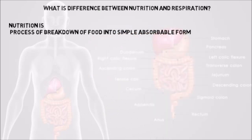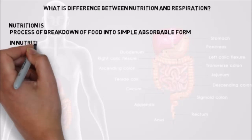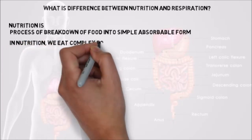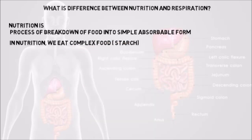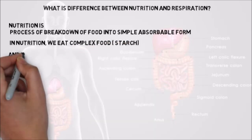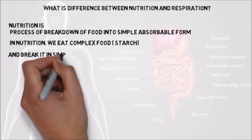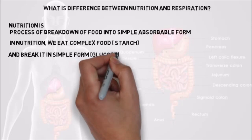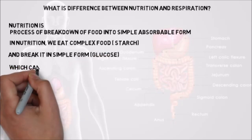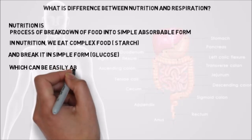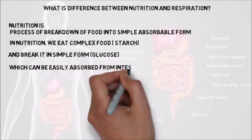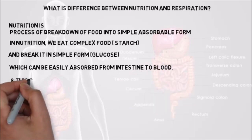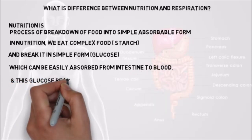Let us understand the basic difference between nutrition and respiration. In nutrition, we eat complex food — i.e. starch — and break it into a simple form, glucose, which can be easily absorbed from our intestine into our blood. So in nutrition, we basically eat complex food, break it into simple glucose, which is absorbed from the intestine. This glucose then reaches each and every cell via the blood.